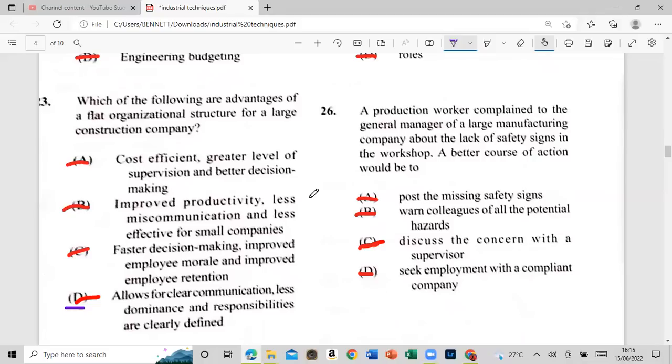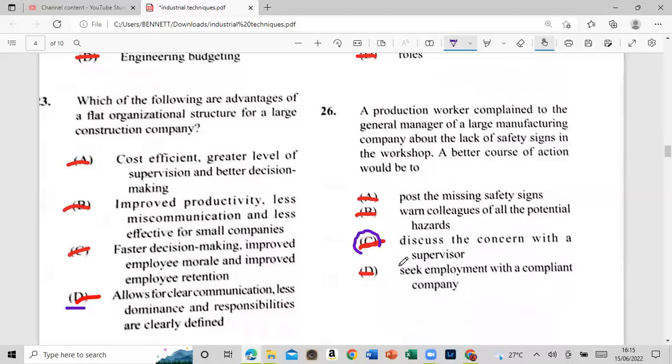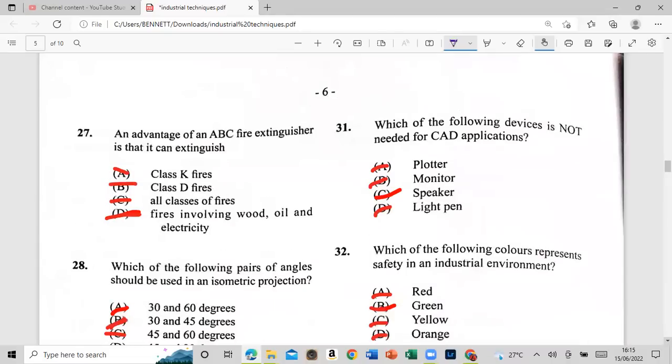There is an affluent to respect authority to come now, when a generation of all the body talk, and work this, you have to take charge. See how you're thinking, Toby? I have to take charge to now work this. I want to see. 27: an advantage of A, B, C fire extinguisher is that you can't extinguish A: class B fire, B: class D fire, C: all classes of fire, B, C: fires involving wood, oil, and electricity. All right? So if the fire are involved, wood, oil, and electricity, you can use an A, B, C fire extinguisher, all right?